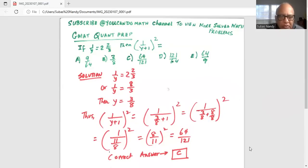Thus 1 over y plus 1 squared will be 1 over, in parenthesis, 1 divided by, for y I write 3 over 8 plus 1. For 1, I write as 8 over 8 in the next step. So it's 3 over 8 plus 8 over 8 in the denominator squared.